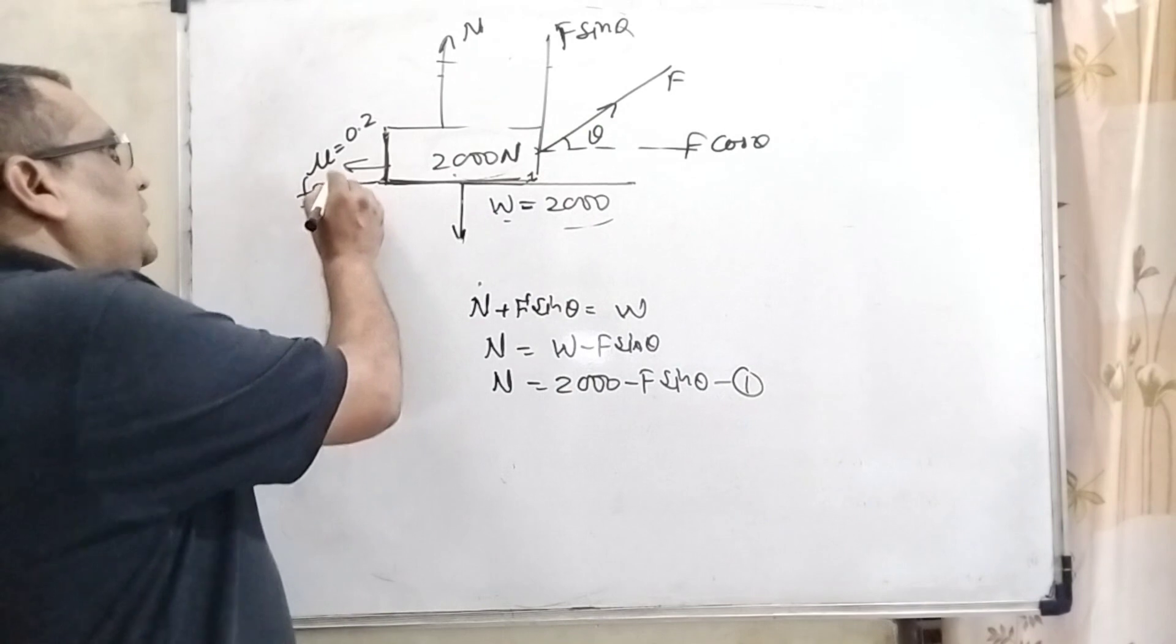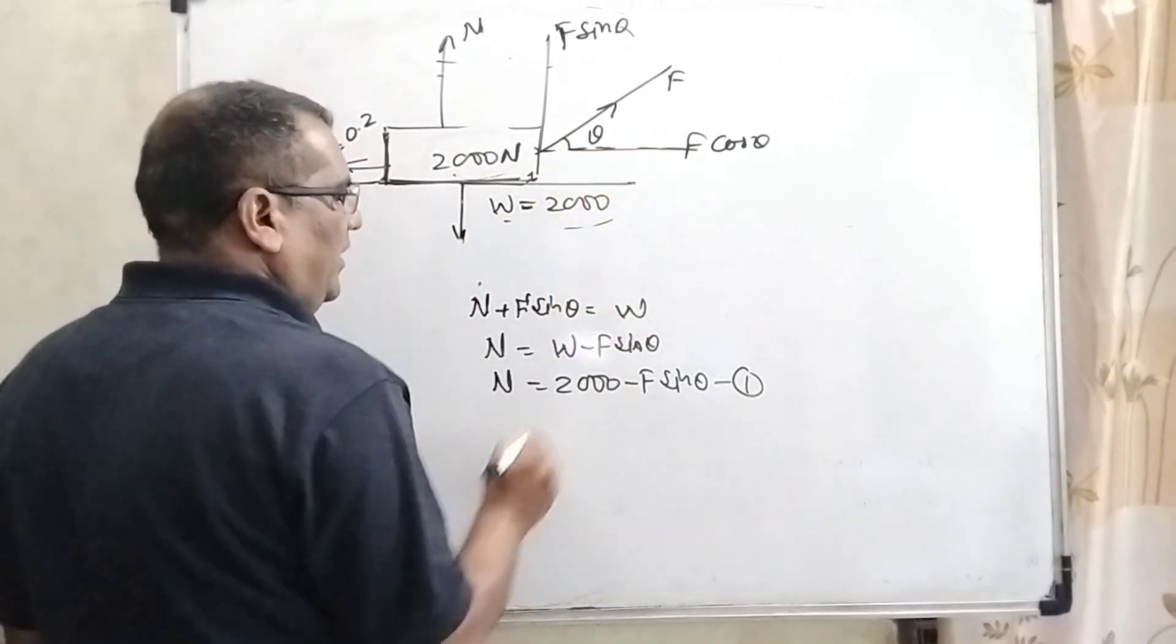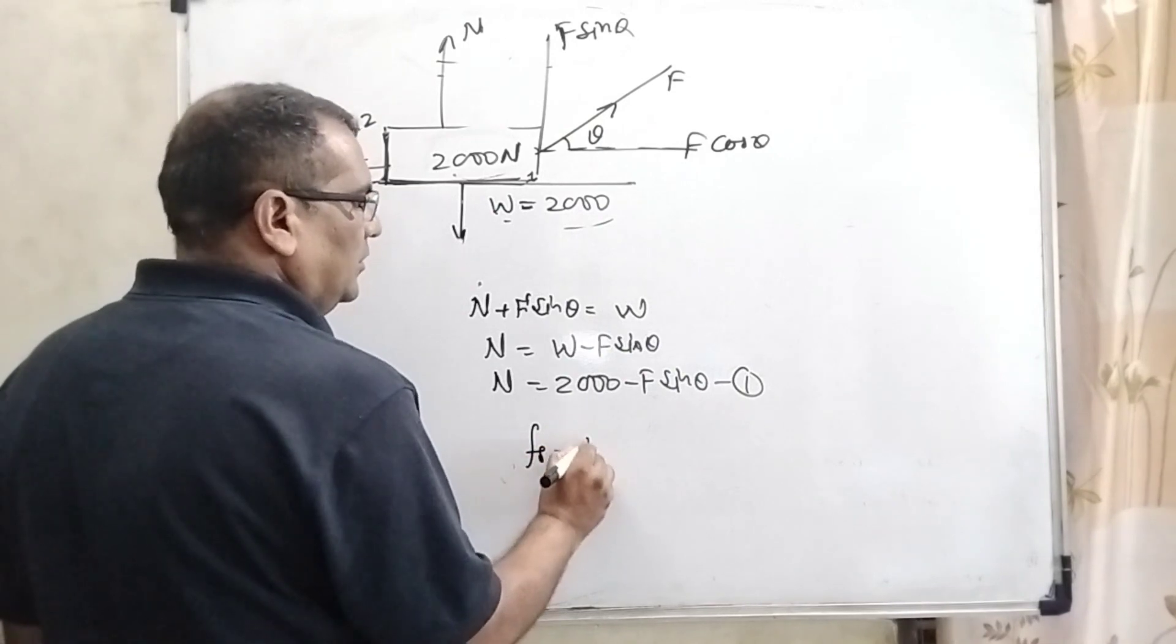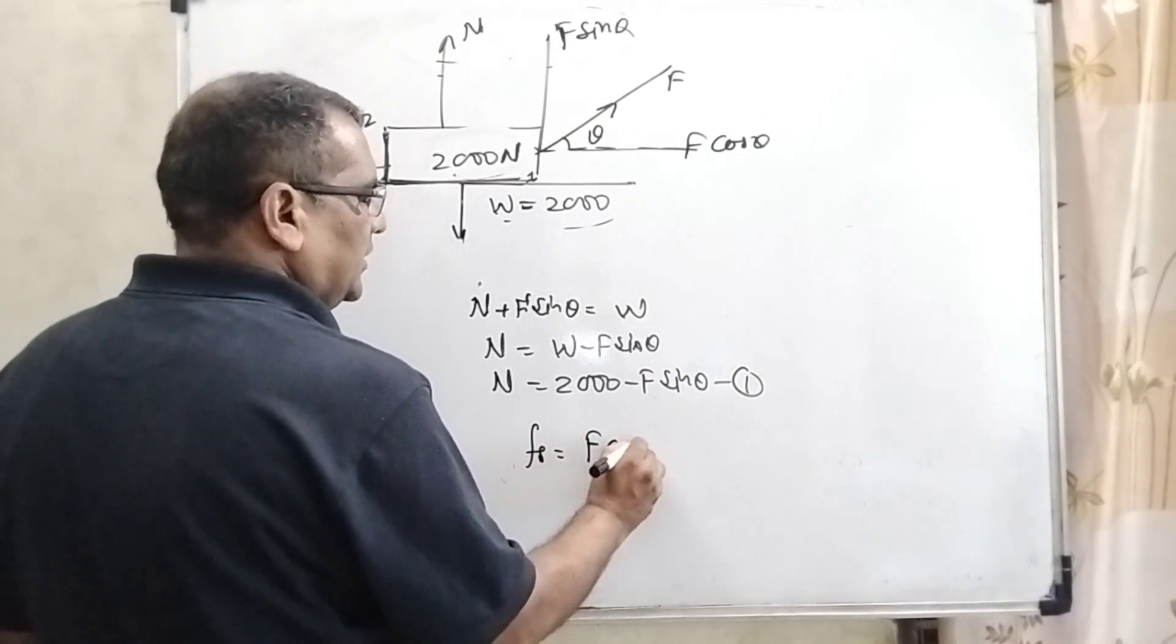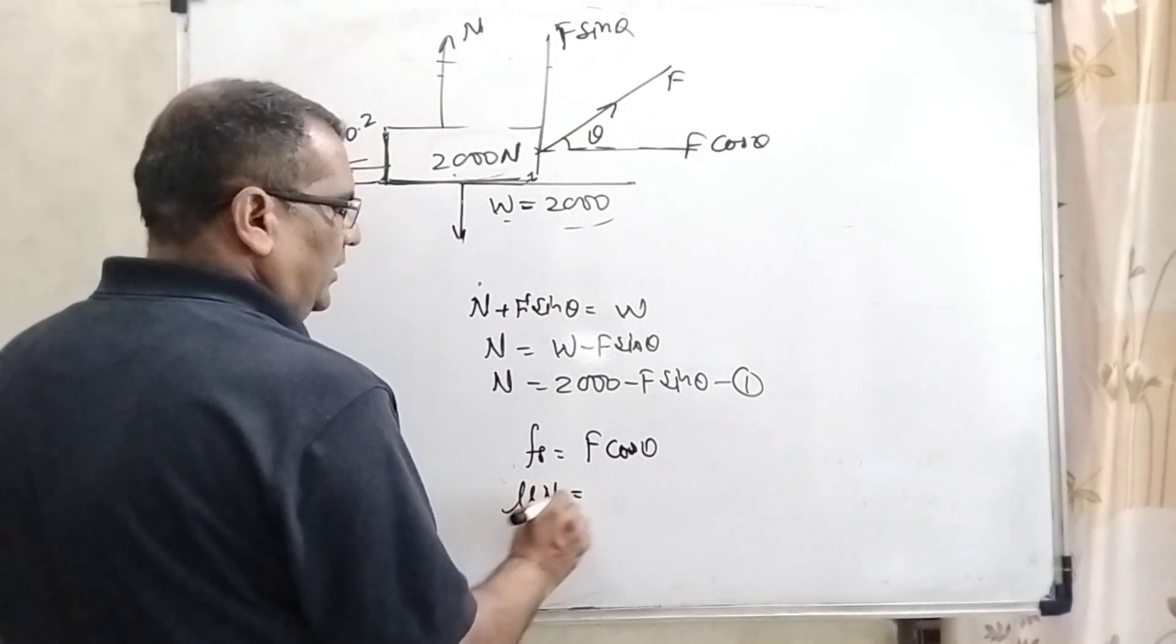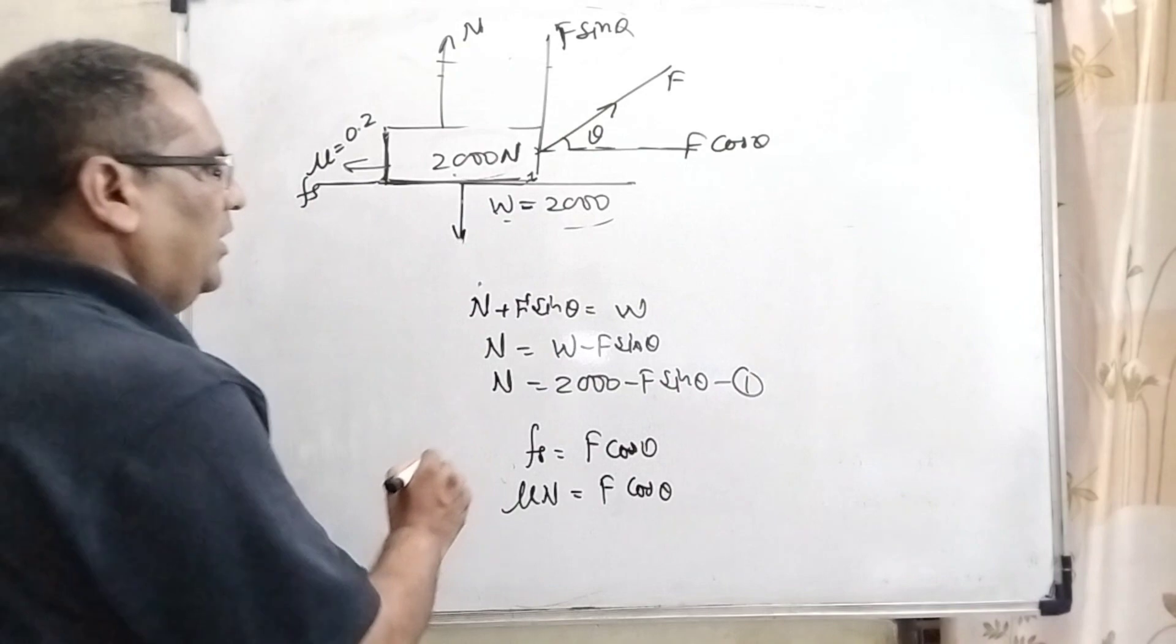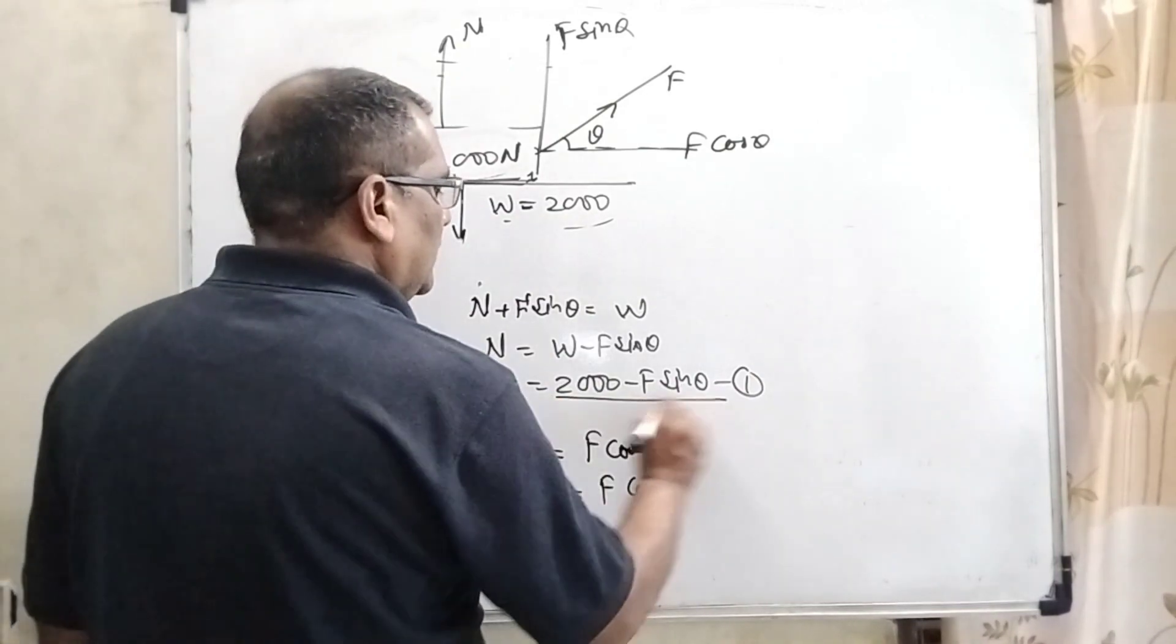Now we see that the frictional force equals this dragging force F cos theta. Fs equal to F cos theta. What is Fs? Mu N. Mu N equal to F cos theta. Here we have already found out N.